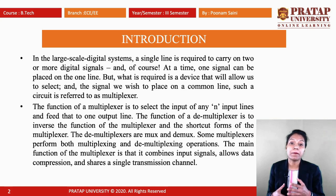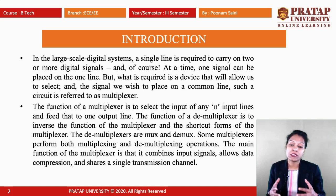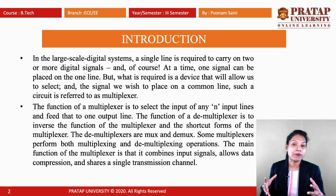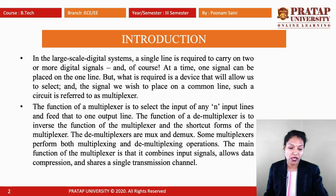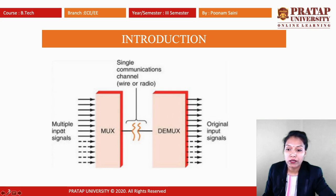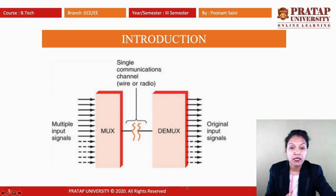The main function of the multiplexer is to combine input signals, allow data compression, and share a single transmission channel. As shown in the diagram, mux has many input lines and a single output, while demux is the opposite — single input and many output lines.